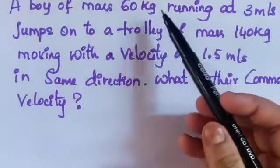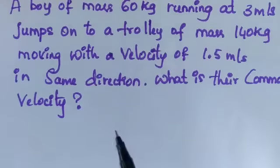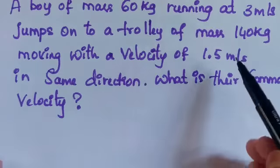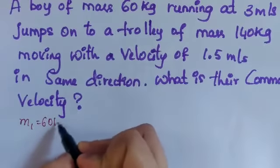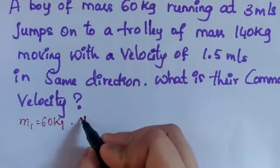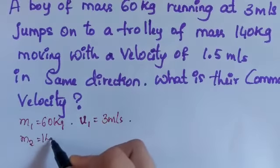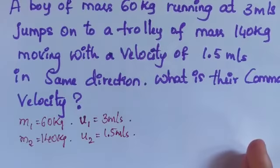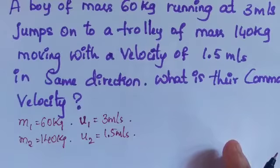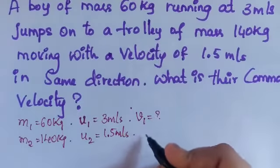The next problem: a boy of mass 60 kg running at 3 meter per second jumps onto a trolley of mass 140 kg moving with a velocity of 1.5 meter per second in the same direction. So M1 is 60 kg with U1 of 3 m/s, and M2 is 140 kg with U2 of 1.5 m/s. What is their common velocity after the boy jumps onto the trolley?